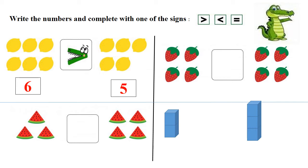Now, let's count together the watermelons. One, two, three. We have here three watermelons. One, two, three, four. We have four watermelons. The crocodile is going to open his mouth to the bigger number, which is four.